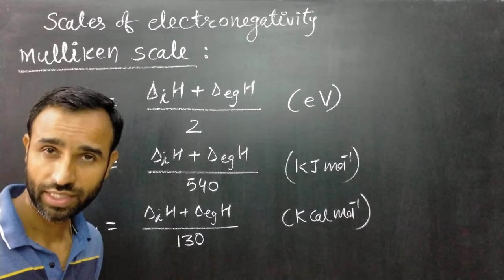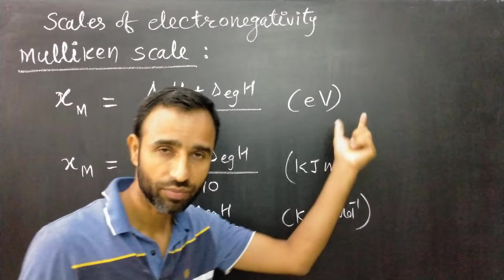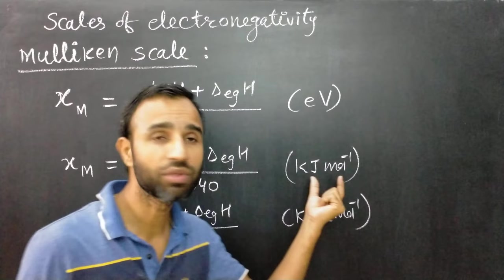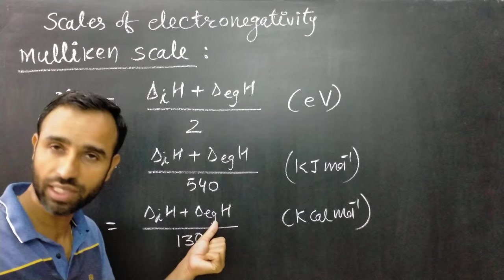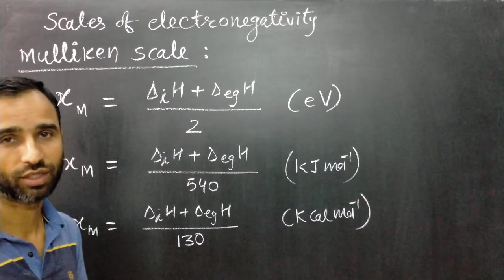Keep in mind: if these values are measured in electron volts, then their sum is divided by 2. If values are measured in kilojoules per mole, then it is divided by 540. This is the Mulliken scale of electronegativity.